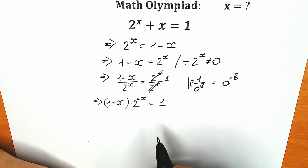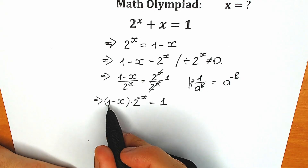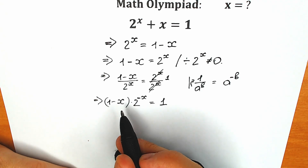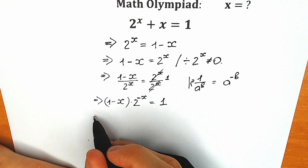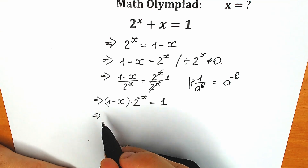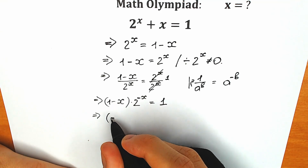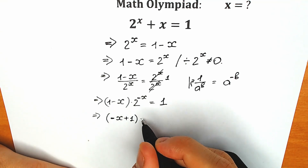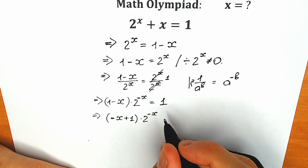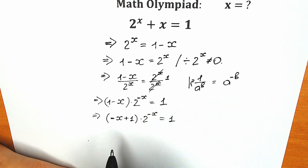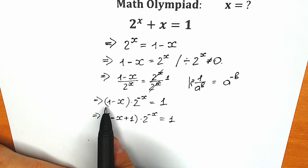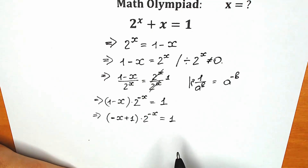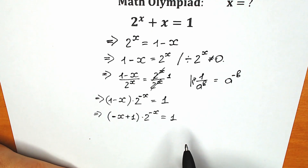After this, we're going to swap positions. Instead of 1 minus x, let's write minus x plus 1 — this is the same expression. So we have minus x plus 1 times 2 to the power minus x, equal to 1.